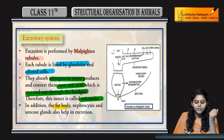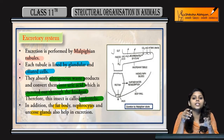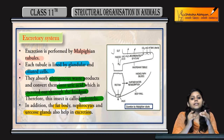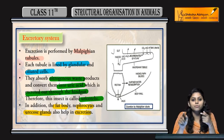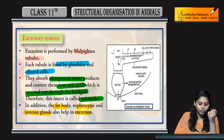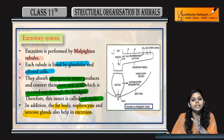Fat bodies, nephrocytes and some uricose glands - they also help in excretion. Kya karta hai excretion? Malpighian tubule kertah hai, Malpighian tubule ke saath-saath fat bodies, nephrocytes and kuch uricose glands hai, jho excretion ke liye help kertete hai.